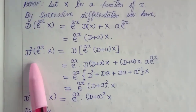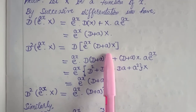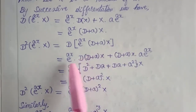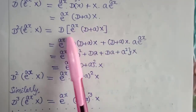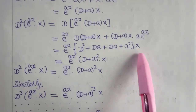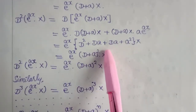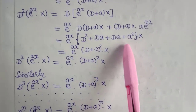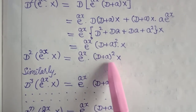Now let us differentiate this again with respect to x. So D squared into e^(ax) into χ is the derivative of the previous step. This is again a product of two functions: first function is e^(ax), second function is (D plus a) into χ. Using the product rule: e^(ax) into derivative of (D plus a)χ, plus (D plus a)χ into derivative of e^(ax), which is a into e^(ax). Taking e^(ax) into χ common, the remaining terms are D squared plus Da plus Da plus a squared, which is of the form (a plus b) whole squared. So D squared of e^(ax) into χ equals e^(ax) into (D plus a) whole squared into χ.